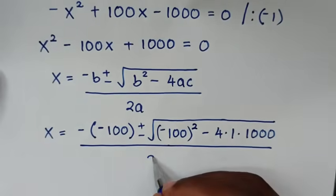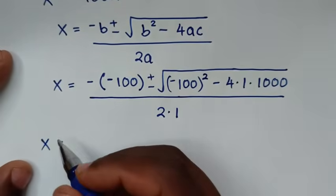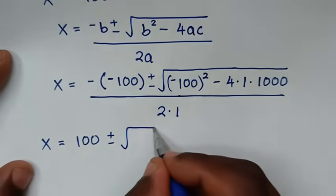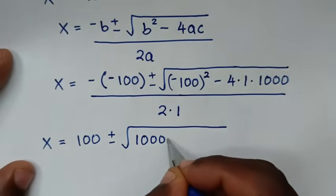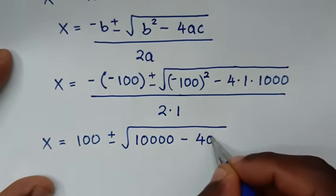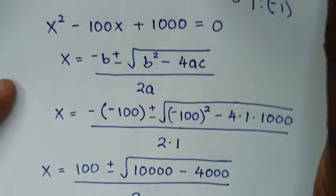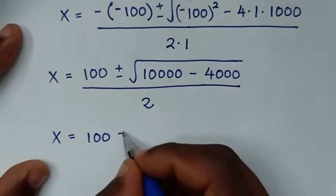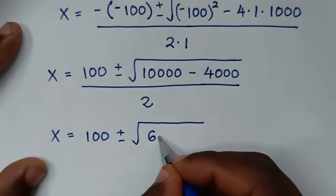Substituting: x equals negative times negative 100, which is positive 100, plus or minus square root of negative 100 squared minus 4 times 1 times 1000, all over 2 times 1. This gives x equals 100 plus or minus square root of 10,000 minus 4,000, which is 6,000, over 2.